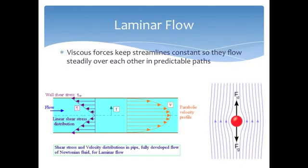Variations in velocity in laminar flow are smooth and predictable. Streamlines are parallel to one another, allowing for precise calculations and models to be made.